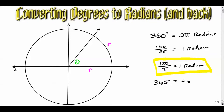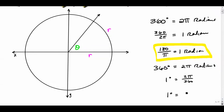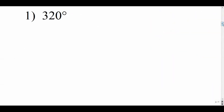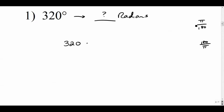Similarly, going the other way: 360 degrees equals two pi radians. To get one degree by itself, divide by 360, giving two pi over 360, which simplifies to pi over 180. So one degree equals pi over 180 radians. This gives us fast ways to convert: when you see a degree value and want to convert it to radians, you'll multiply by one of these two factors.